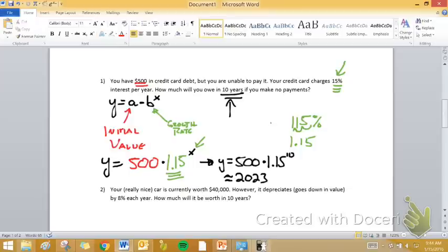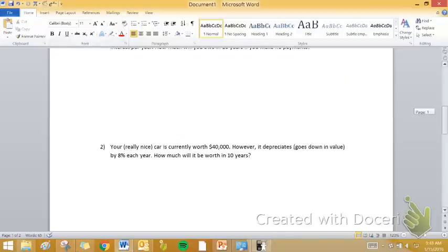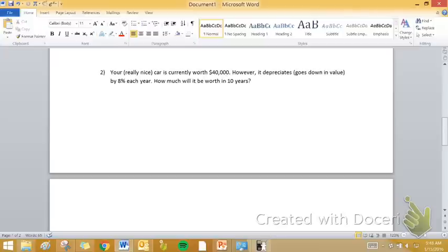Let's look at another example. Your really nice car is currently worth $40,000. However, it depreciates, or in other words, goes down in value by 8% each year. How much will it be worth in 10 years? So we're going with 10 years again. That initial value, the current value of the car, is $40,000, and it goes down in value by 8% each year.